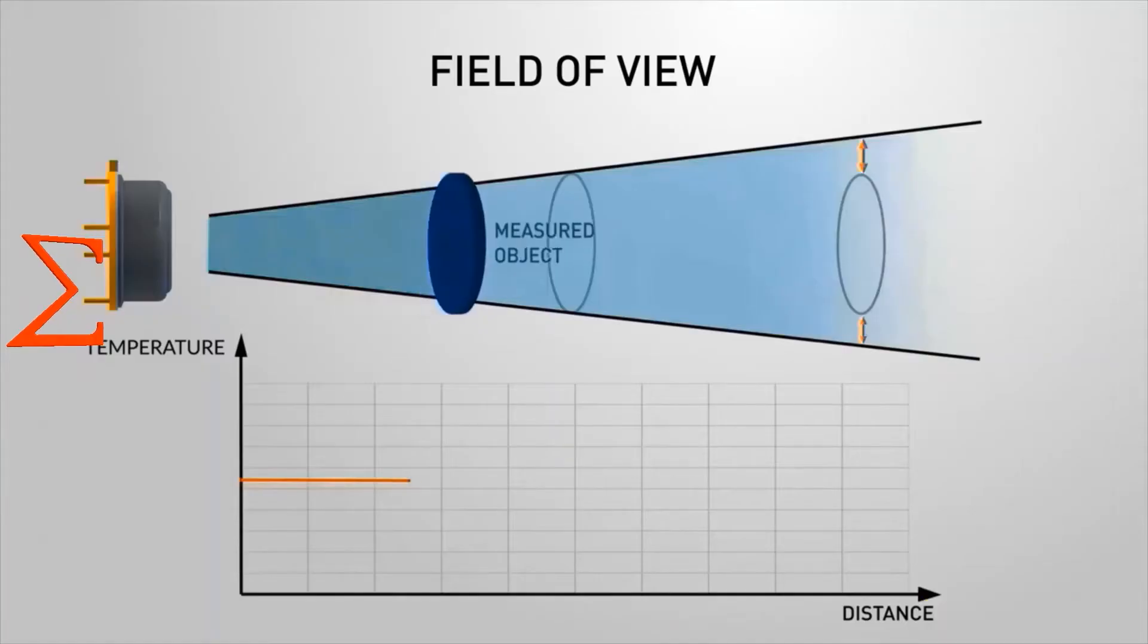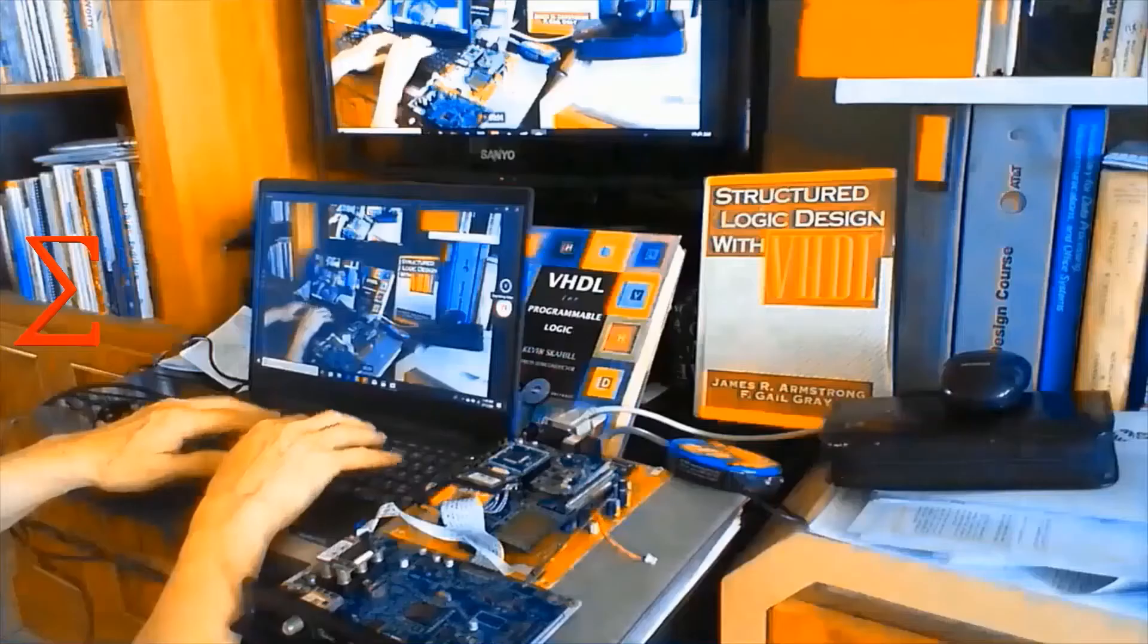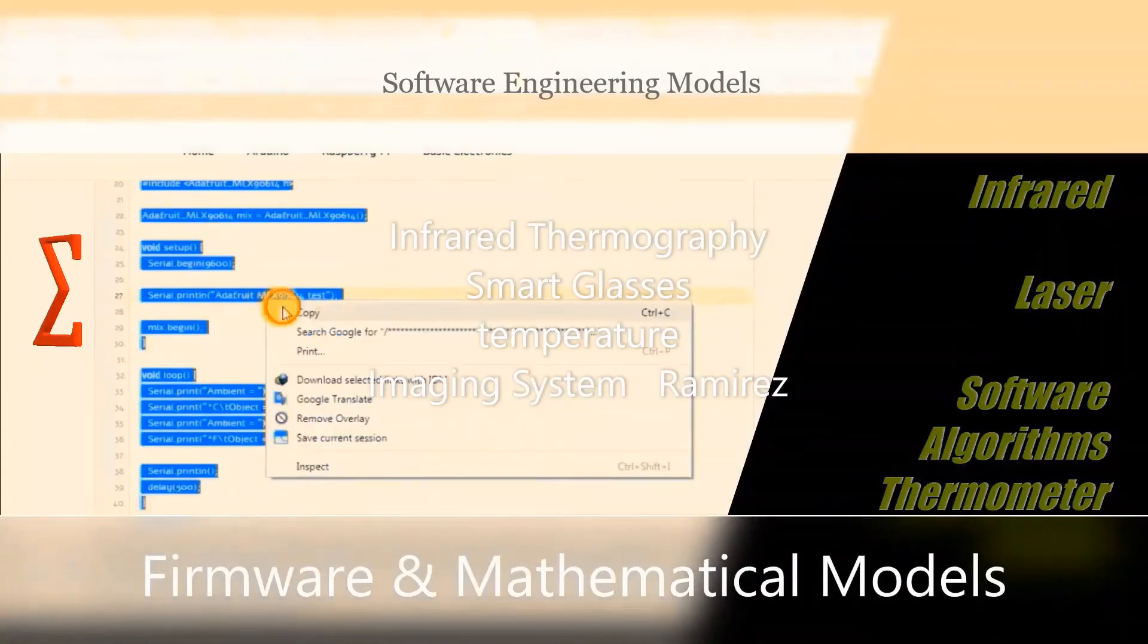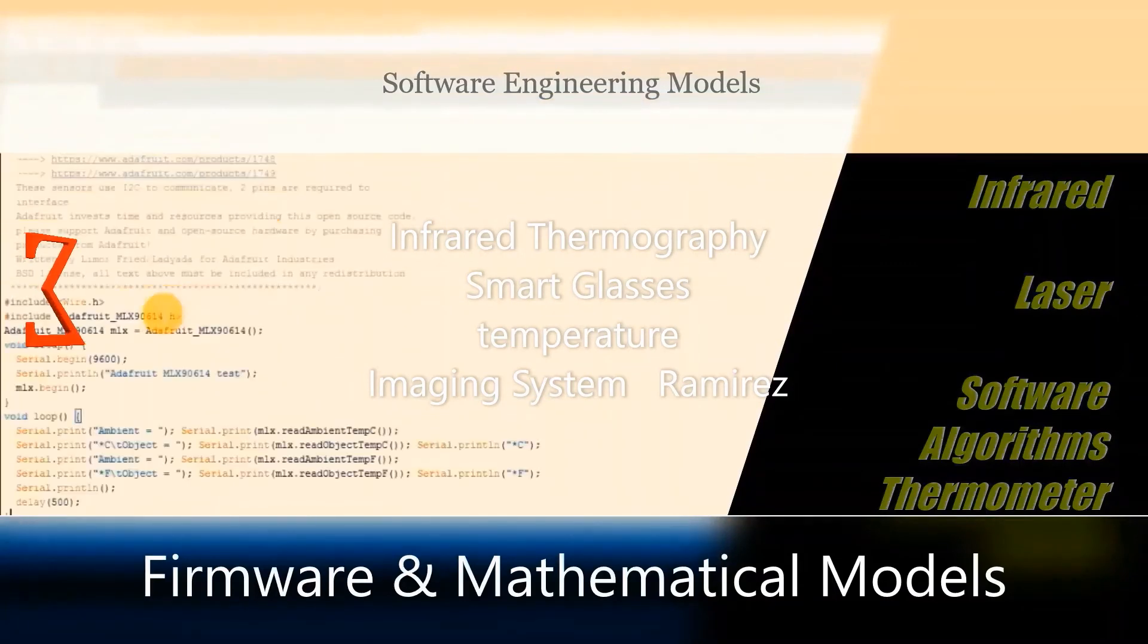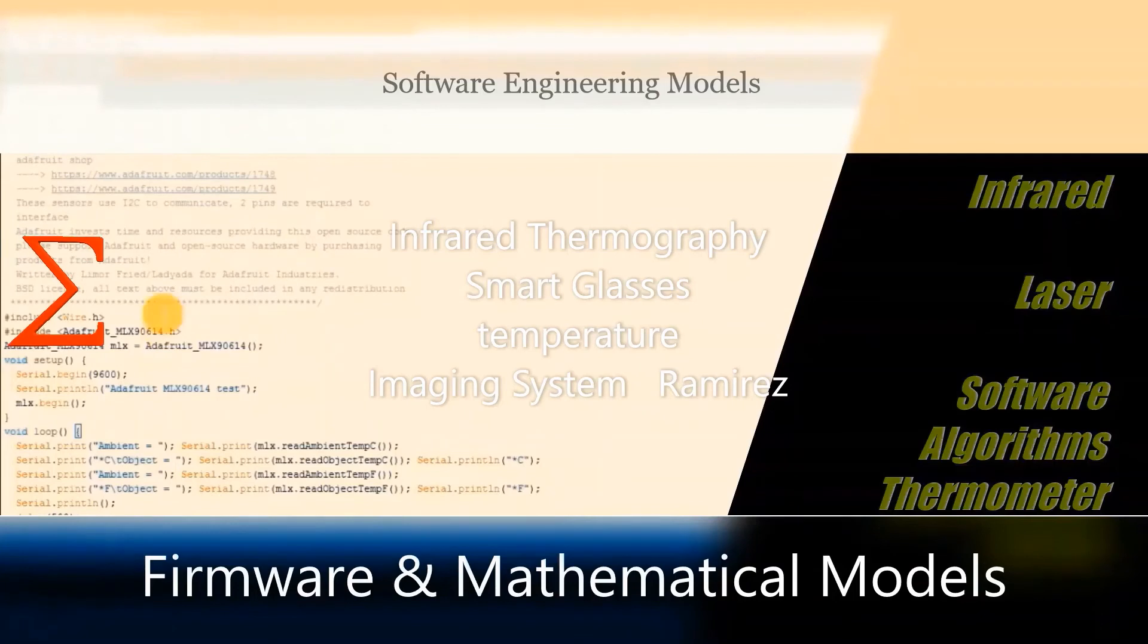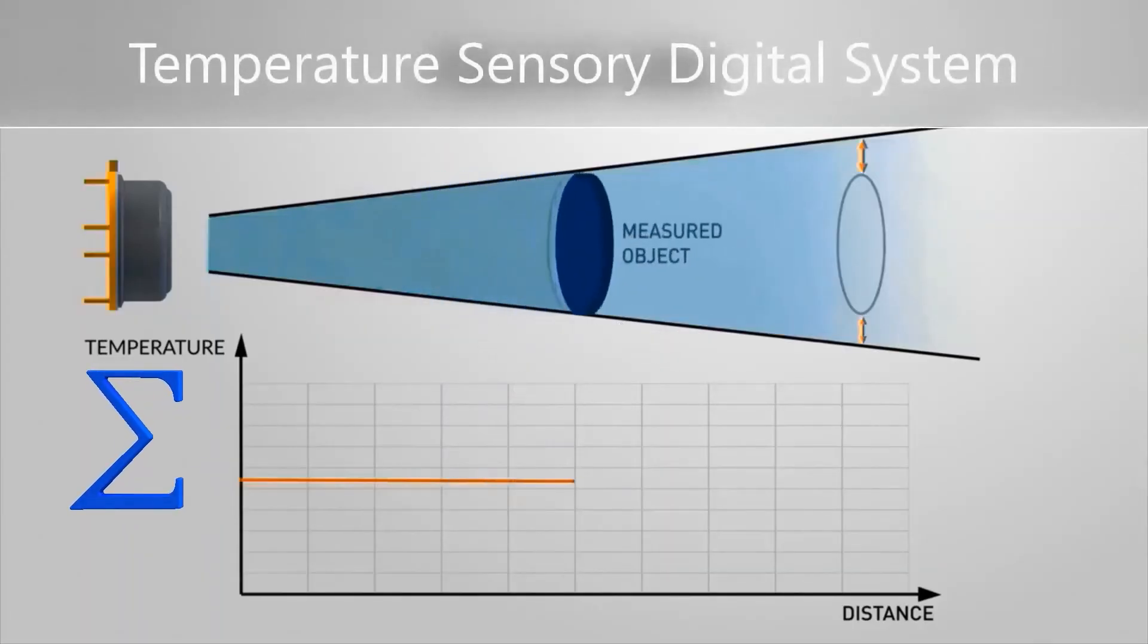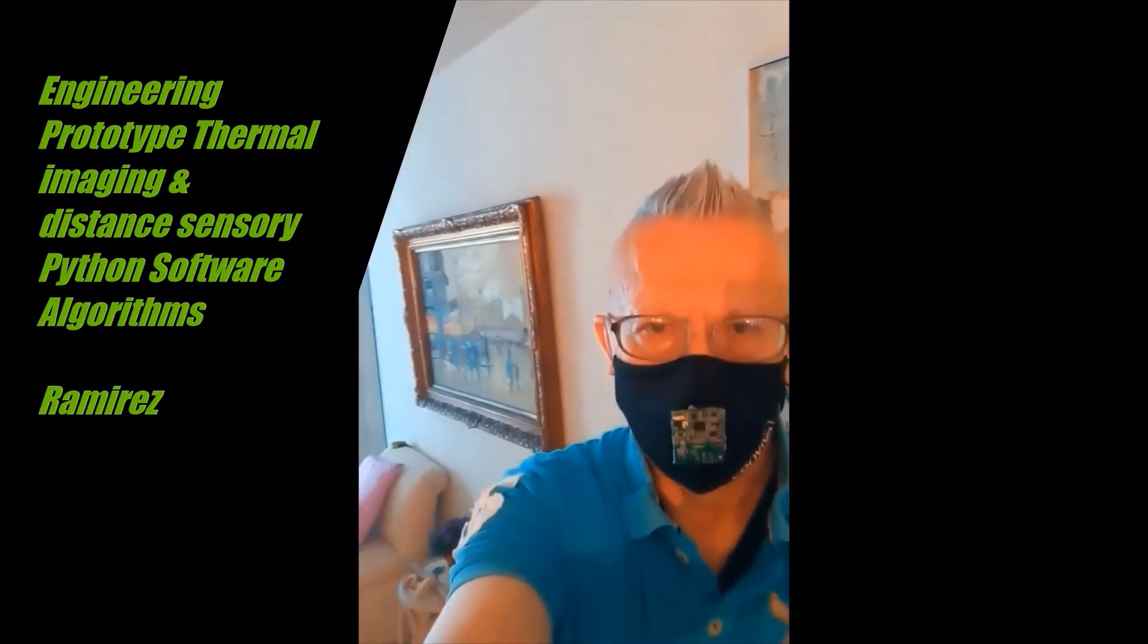Any object at a temperature above absolute zero emits infrared radiation. The human eye cannot see this type of radiation at all. Thus, infrared measuring devices are required to acquire and process this information. Infrared radiation emitted by an object transforms it into an electronic signal. The most basic infrared device is a pyrometer which produces a single output using a single sensor.